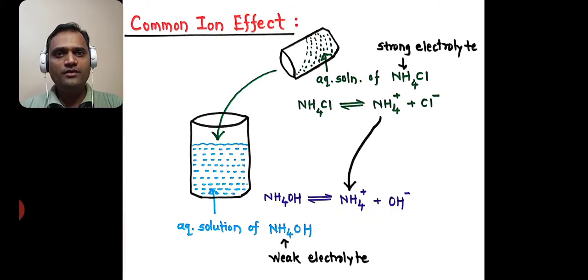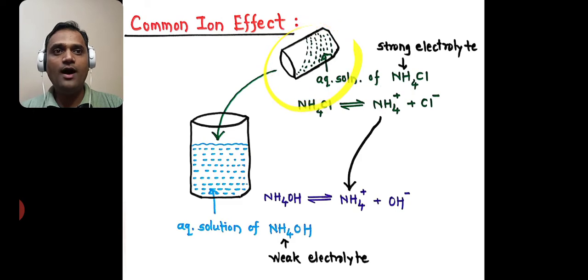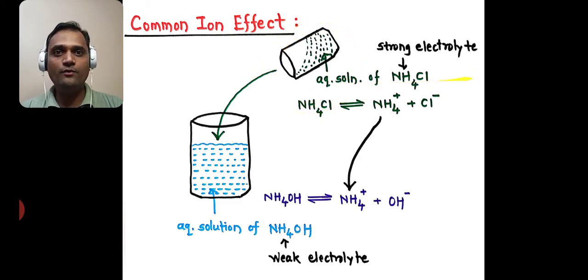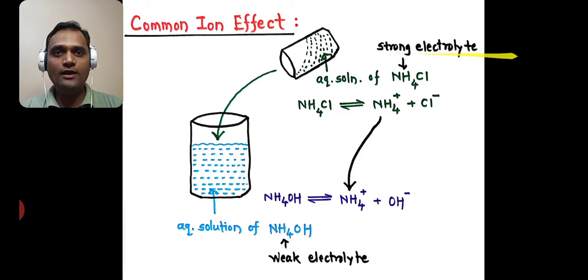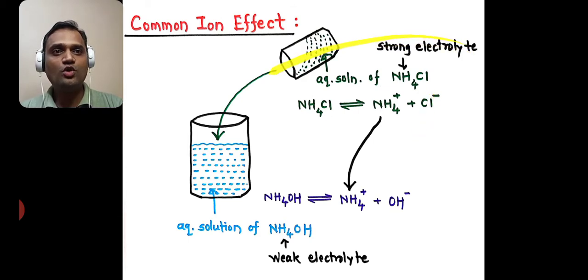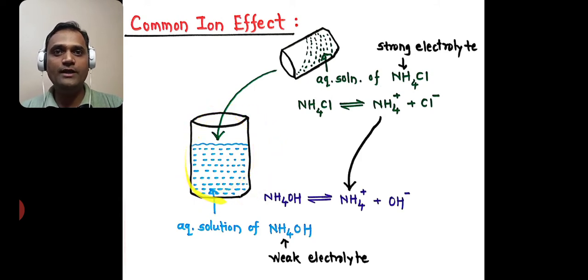Suppose that in this solution, we add another aqueous solution of ammonium chloride. We know that ammonium chloride is a strong electrolyte, so it undergoes almost complete ionization to form NH4+ and Cl−. So we have added that strong electrolyte into the aqueous solution of the weak electrolyte.